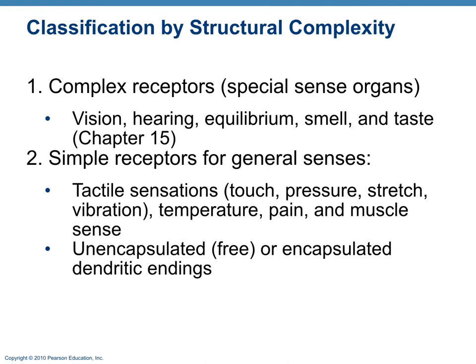If we classify receptors according to structural complexity, we have complex receptors, which are the special sense organs — vision, hearing, equilibrium, smell, and taste. Simple receptors include tactile sensations such as touch, pressure, stretch, vibration, temperature, and pain. Unencapsulated free or encapsulated dendritic endings are also classified under simple receptors.